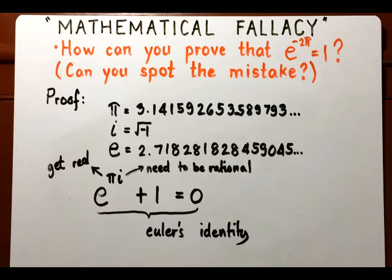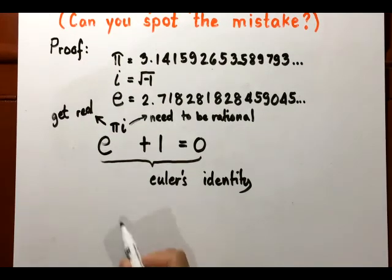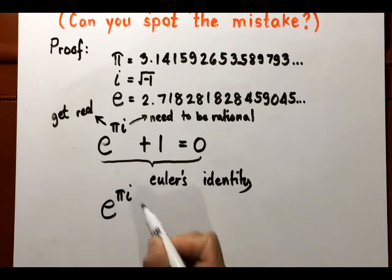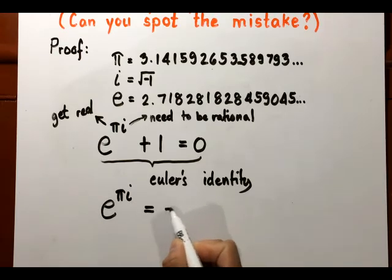Now, if I subtract both sides by one, that becomes e to the power πi is equal to negative one.